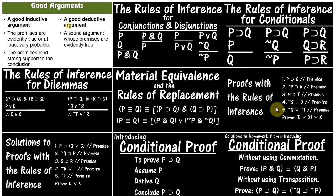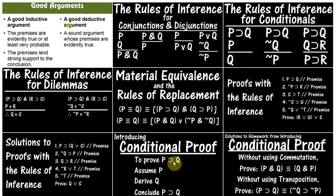From there we moved on to doing proofs, starting with just the rules of inference. Then we went on to conditional proof, which is a way of proving a conditional by assuming the antecedent — the 'if' part — and trying to prove the consequent, which is the 'then' part. So if we want to prove 'if p then q' we would assume p and try to get q. And then there were some solutions to homework from introducing conditional proof.